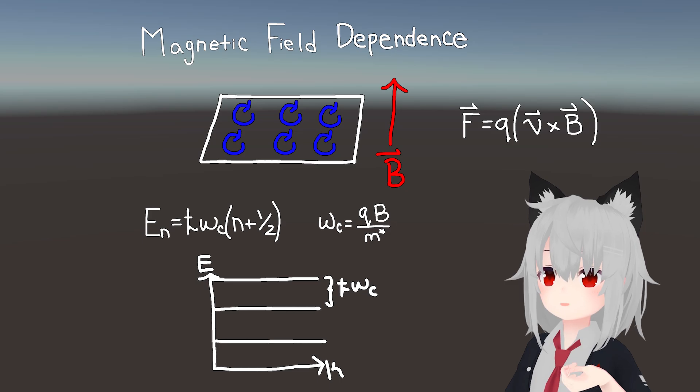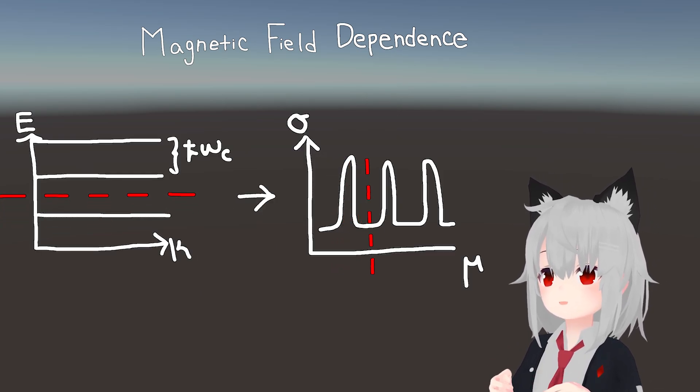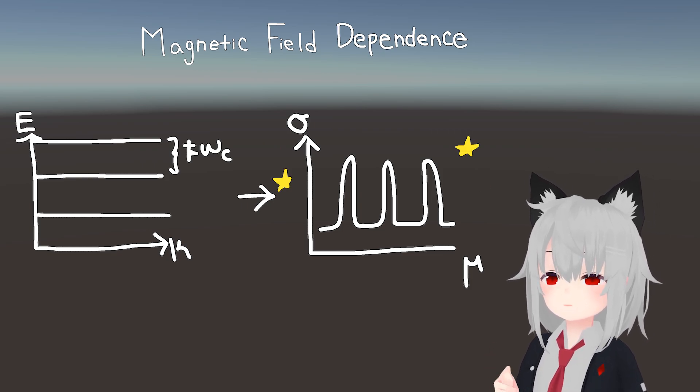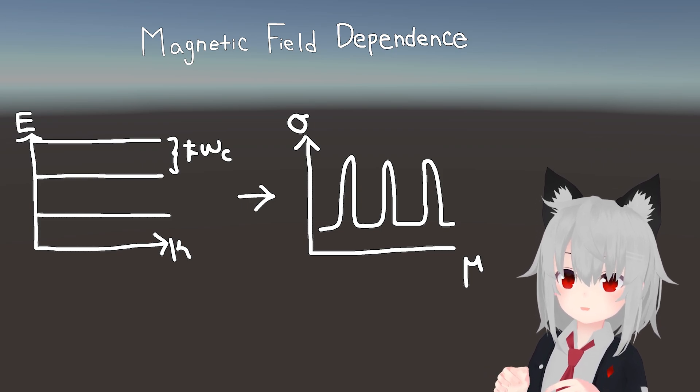This results in a periodic dependence of the conductivity on the value of the Fermi level, giving us something that we can measure. Now, it's important to note at this point that the argument so far depends on the two-dimensionality of the electrons.